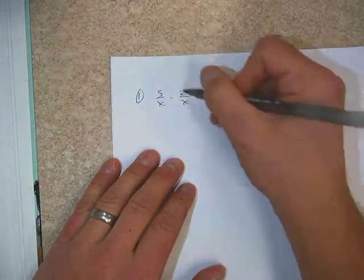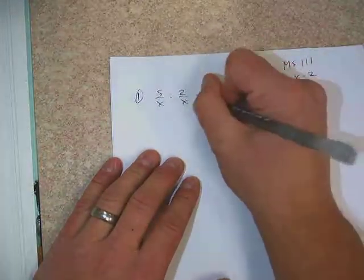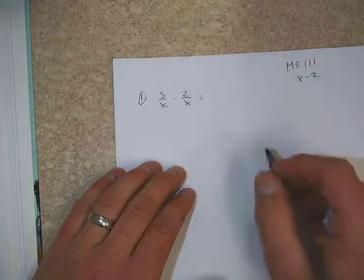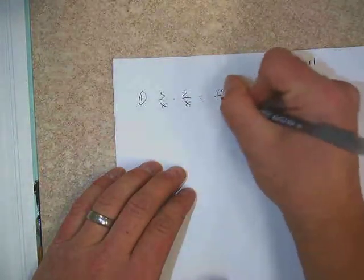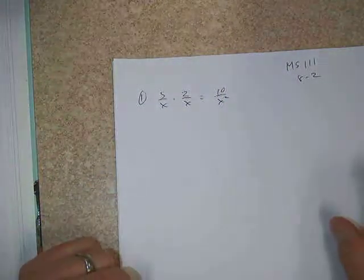So we have a rational function here, rational function here. And if we multiply them, we're going to multiply them just like we would any other fraction. We're going to multiply and get 10 on top and x squared on the bottom, and we'll be done.